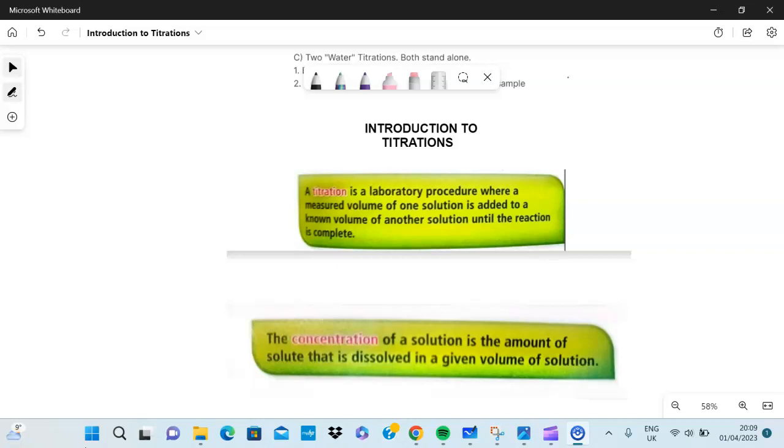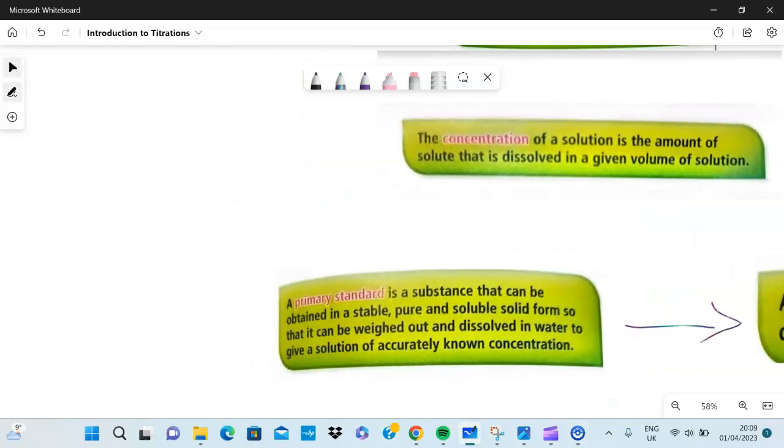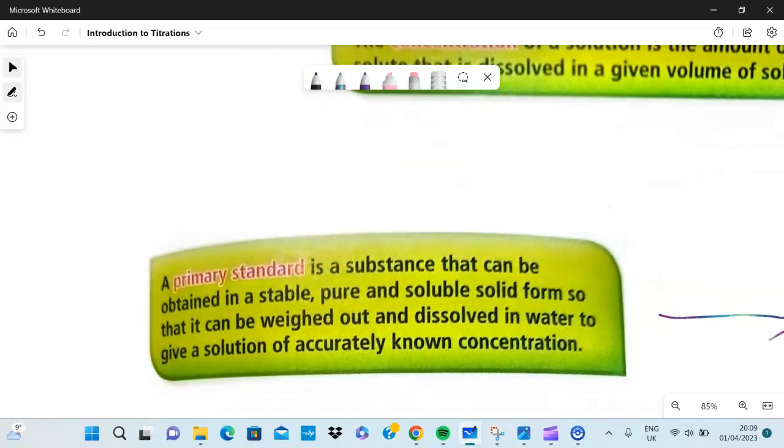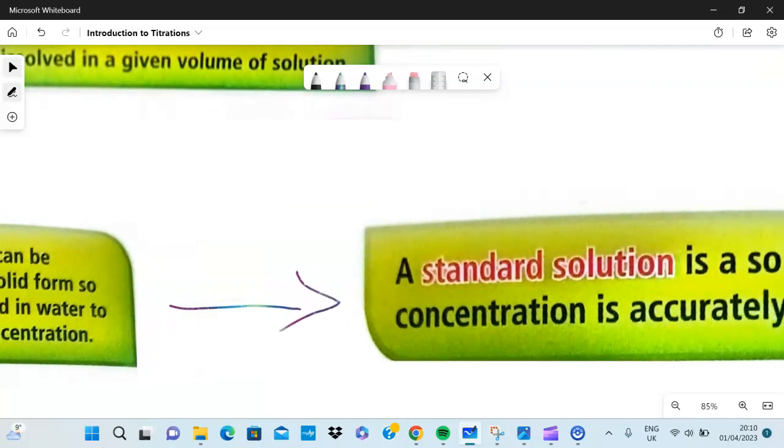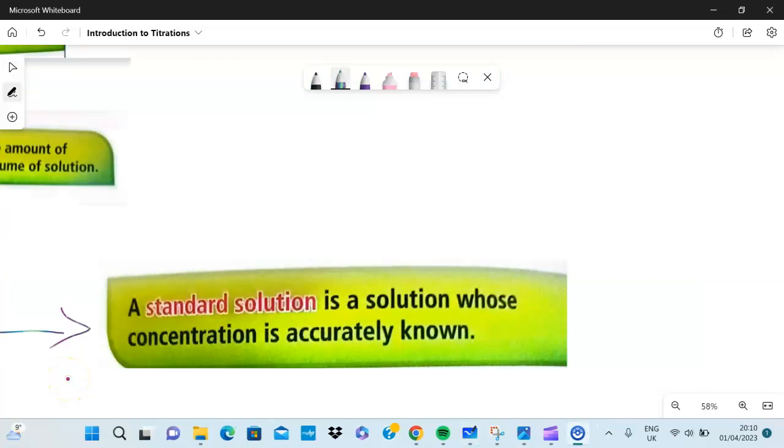To find the concentration of a solution we need something called a primary standard. A primary standard is a substance that can be obtained in a stable, pure, soluble solid form so it can be weighed out and dissolved in water to give a solution of accurately known concentration. You need to know the concentration of one of the reagents. When you mix it in water you form something called a standard solution. A standard solution is a solution whose concentration is accurately known.